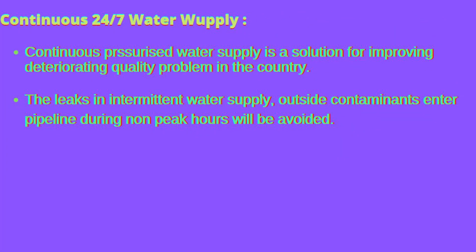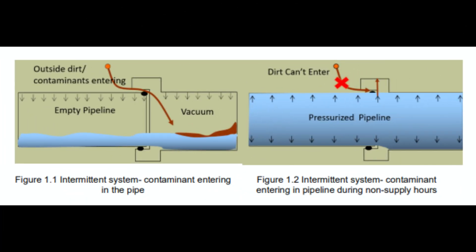Let us understand what continuous 24x7 water supply is. Continuous pressurized water supply is a solution for improving the deteriorating water quality problem in the country. Through leaks in intermittent water supply, outside contaminants enter the pipeline during non-peak hours due to the vacuum that develops inside the pipeline. Thus, water becomes non-potable.